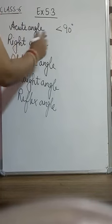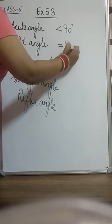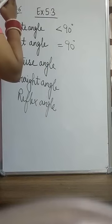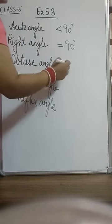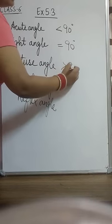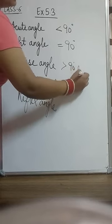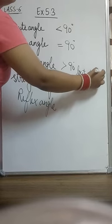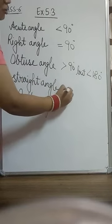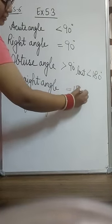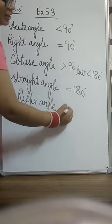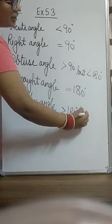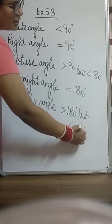A right angle is always equal to 90 degrees. Obtuse angle is greater than 90 but less than 180 degrees. A straight line angle is always equal to 180 degrees. A reflex angle is greater than 180 degrees but less than 360 degrees.